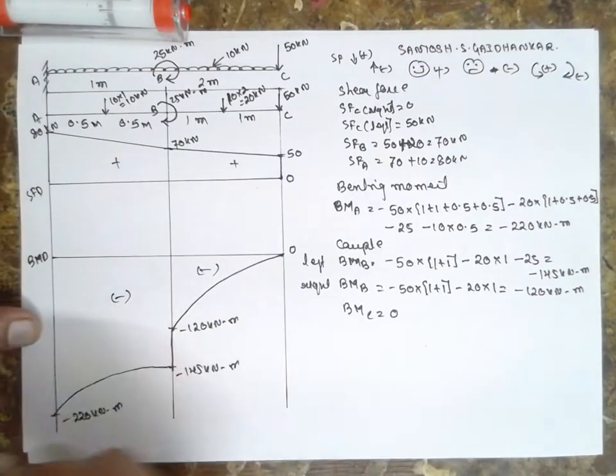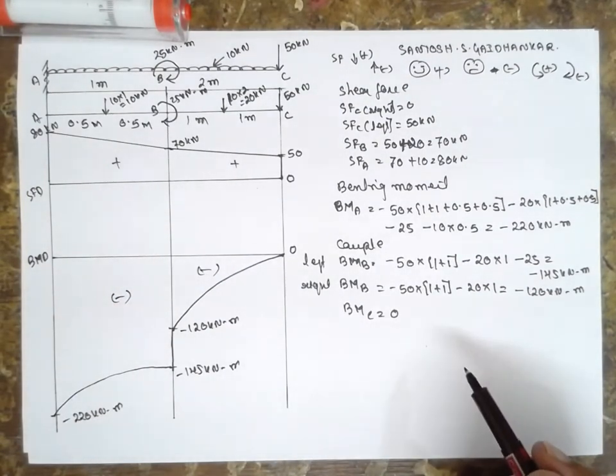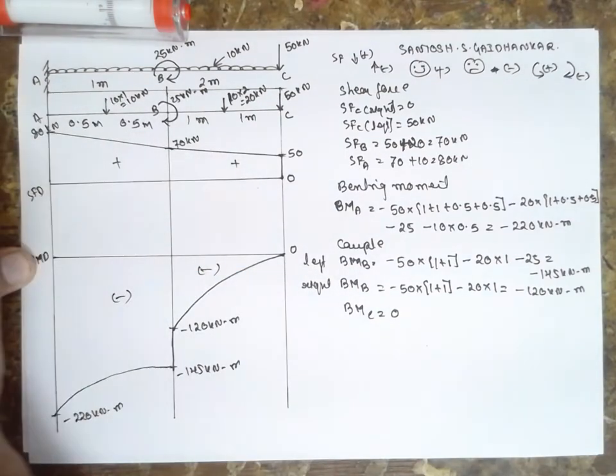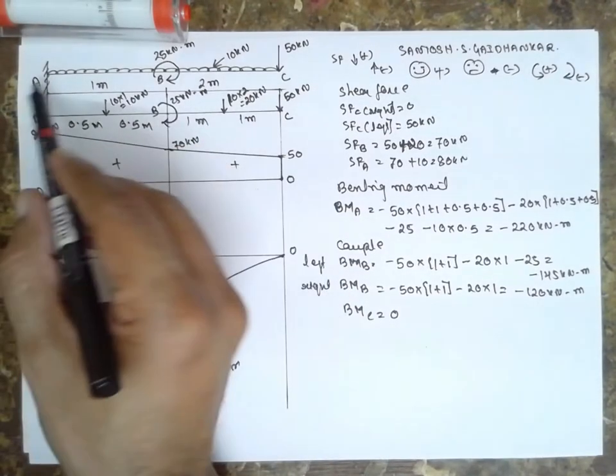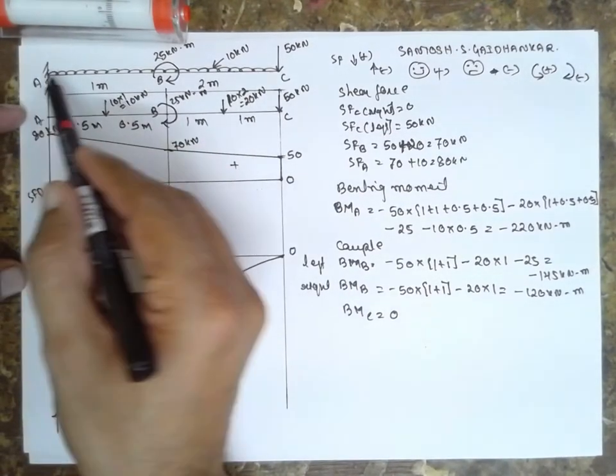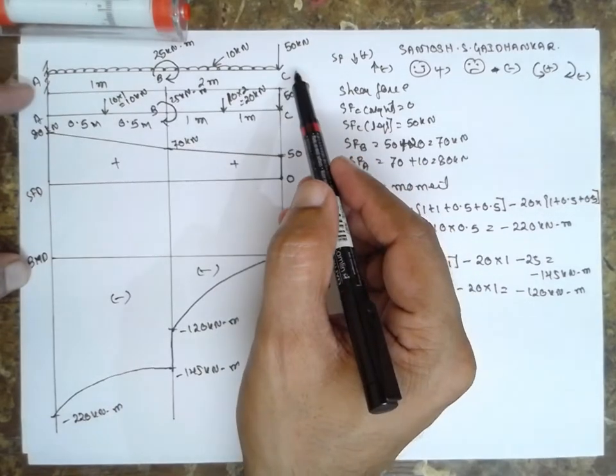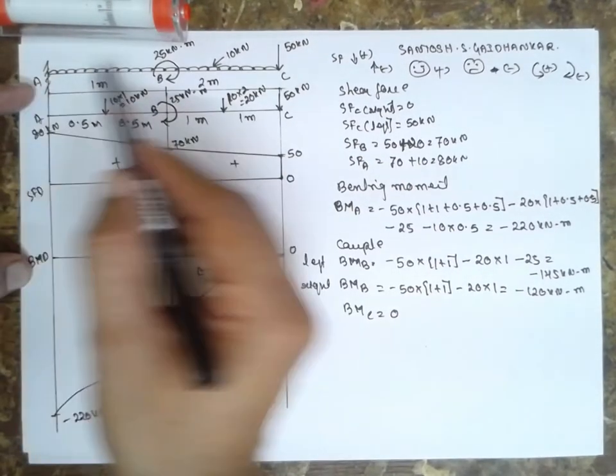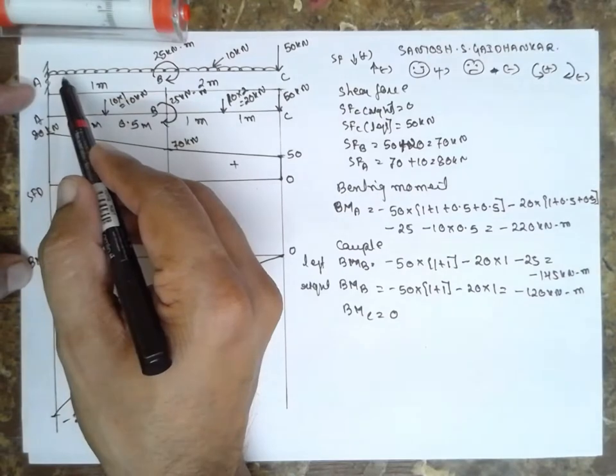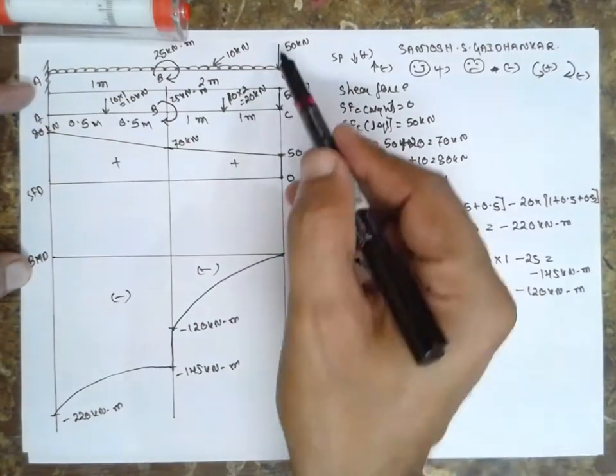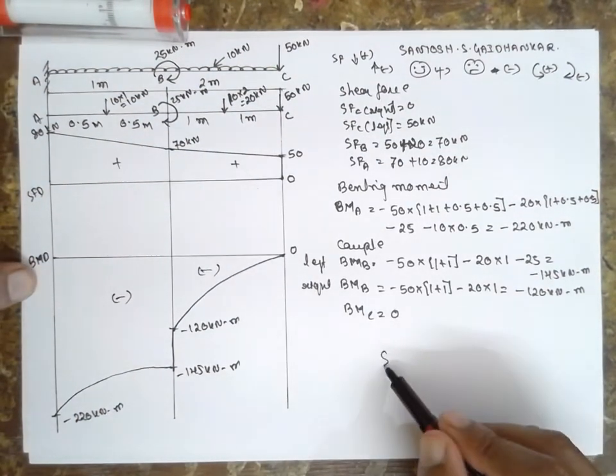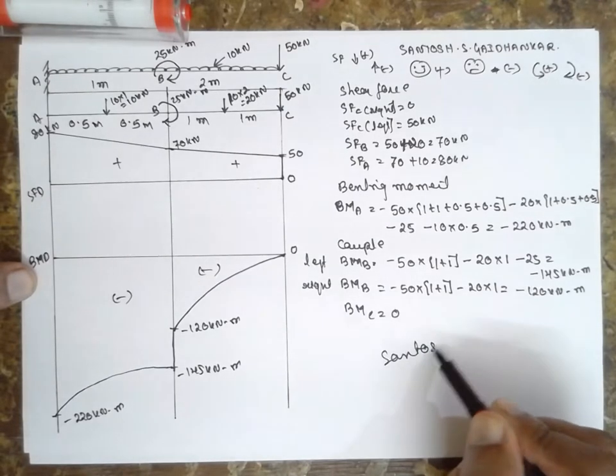Negative, negative, negative. In this way you have to solve the problem when the cantilever beam is subjected to a uniform distribution load and a couple and point load. I am Santosh Gaidankar. Thank you very much.